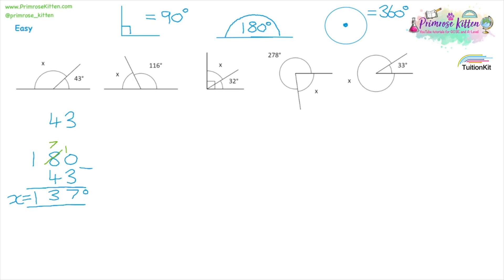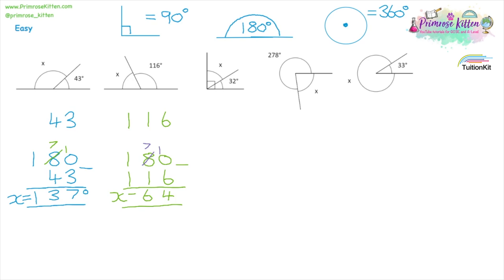Looking at question two, it's another straight line. We identify the angle we've been given: 116. The total for a straight line is still 180. So we subtract 116 from 180. We have to borrow one to start. 10 take away 6, 7 take away 1, and 0 take away 0. Our missing angle x is equal to 64 degrees.